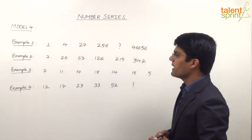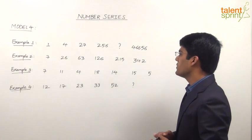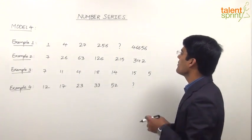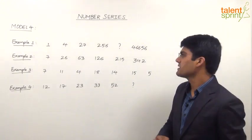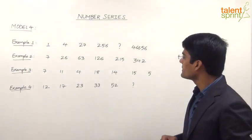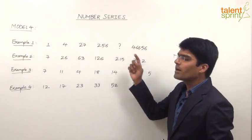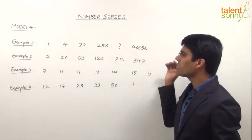The first example here is 1, 4, 27, 256, question mark, 46656 and we are supposed to find out what comes in place of question mark. What is the logic in this series?